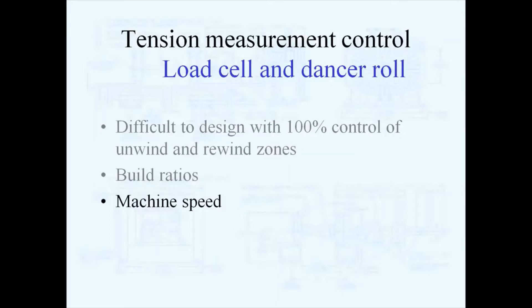Closed loop controls not only have to deal with build ratios, but they have to deal with machine speed changes. You may have webs that stretch. Stretchy webs can be difficult to control because there's a lot of stretch and controls have to compensate for that, so they can be unstable.